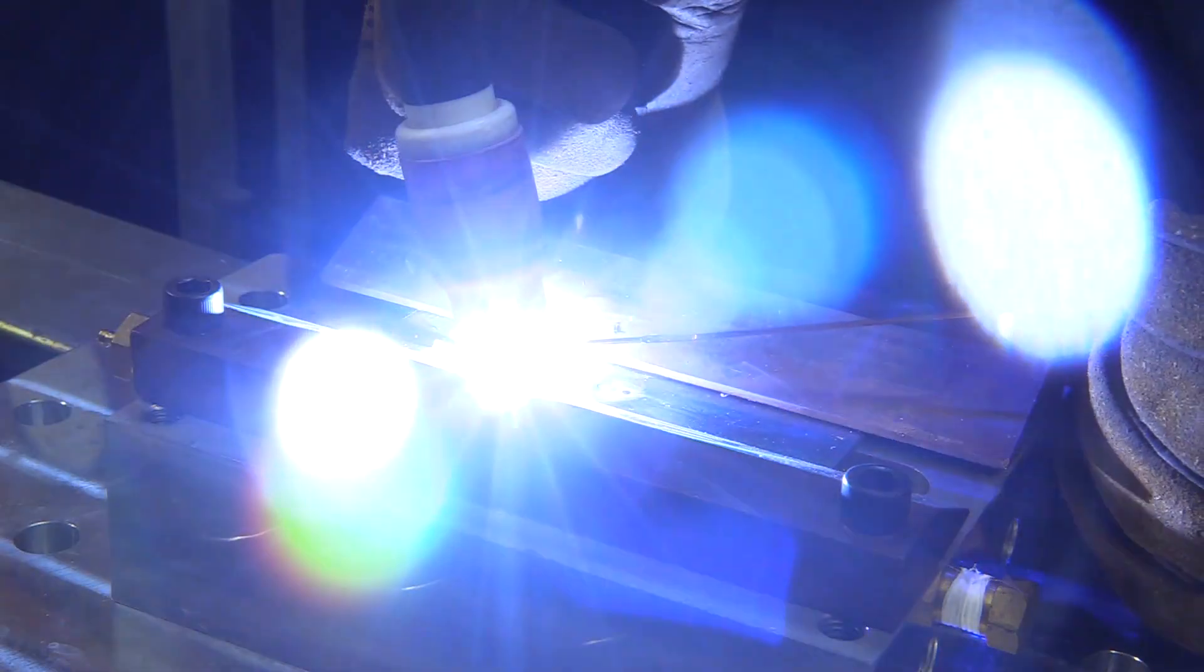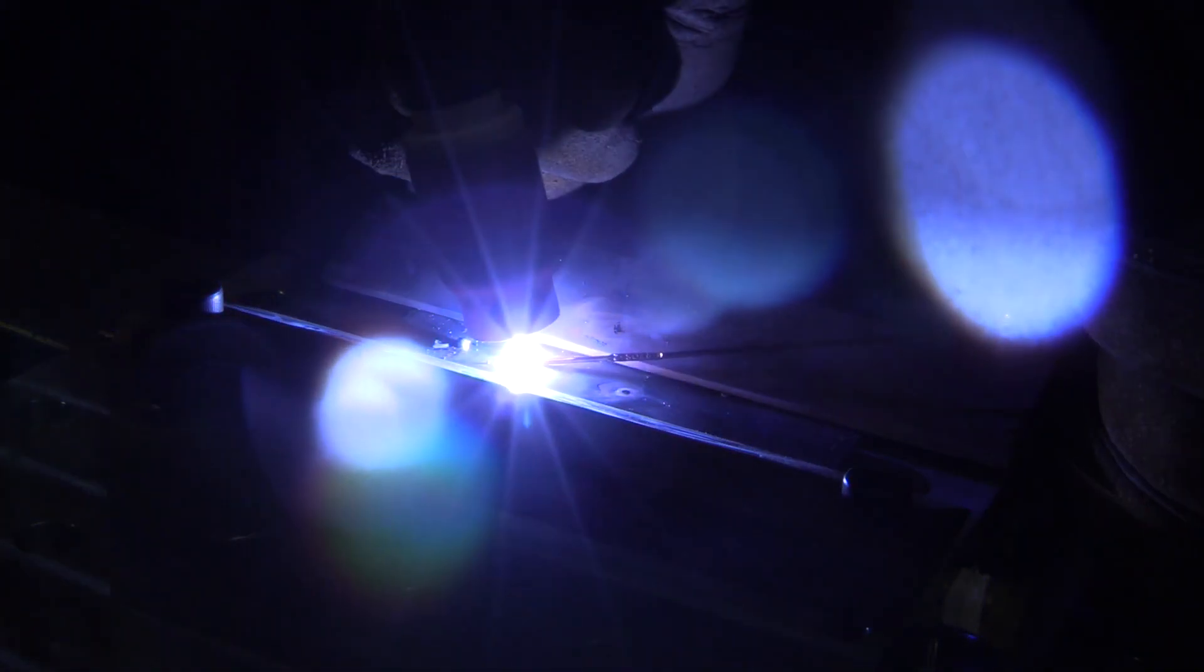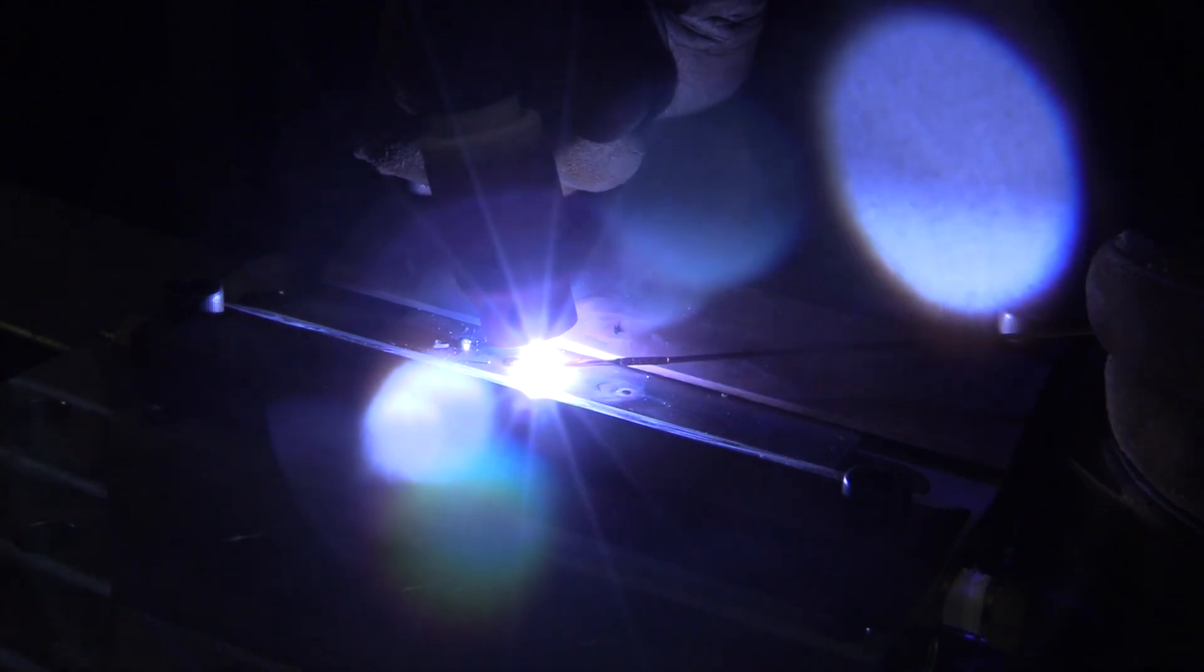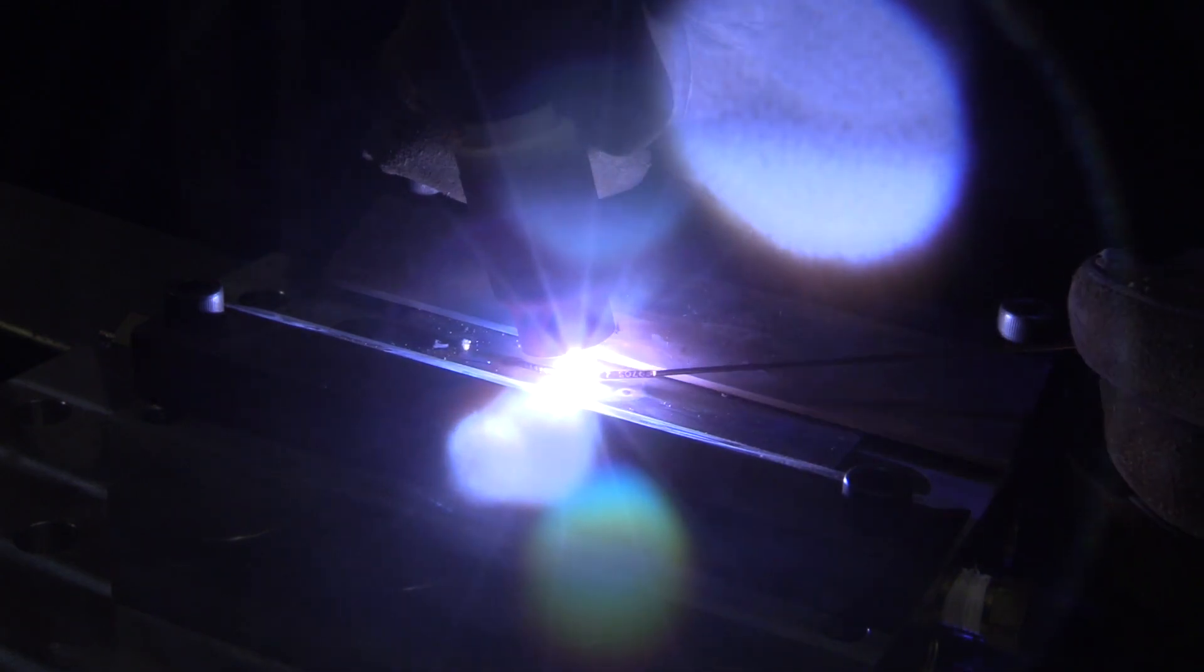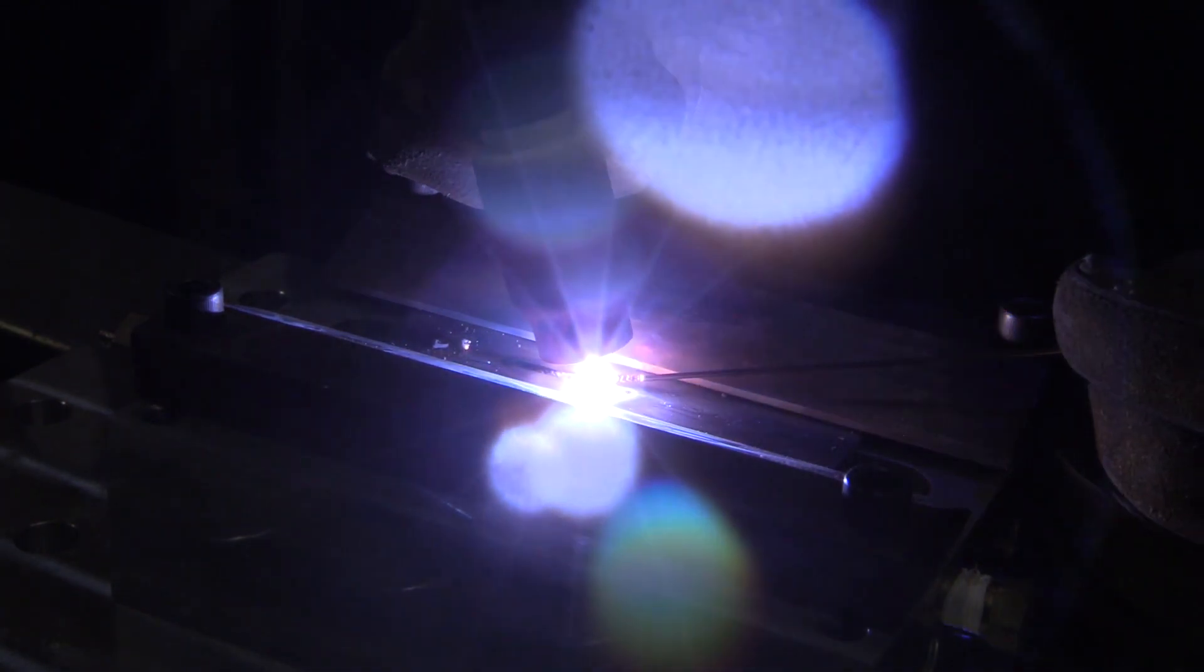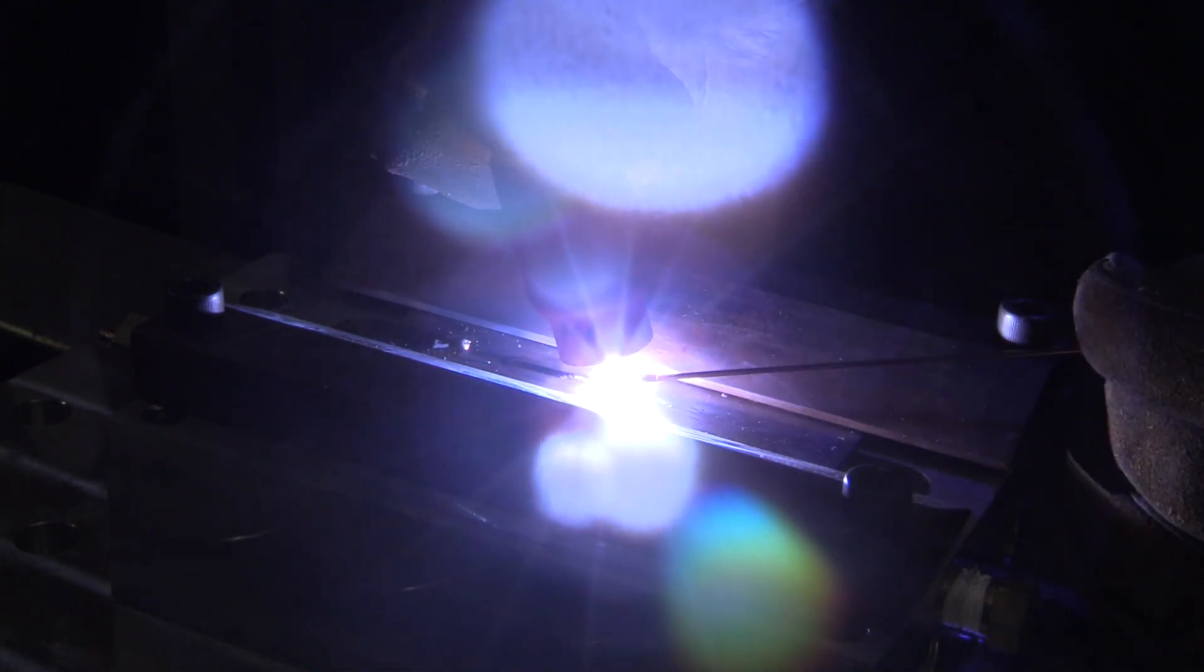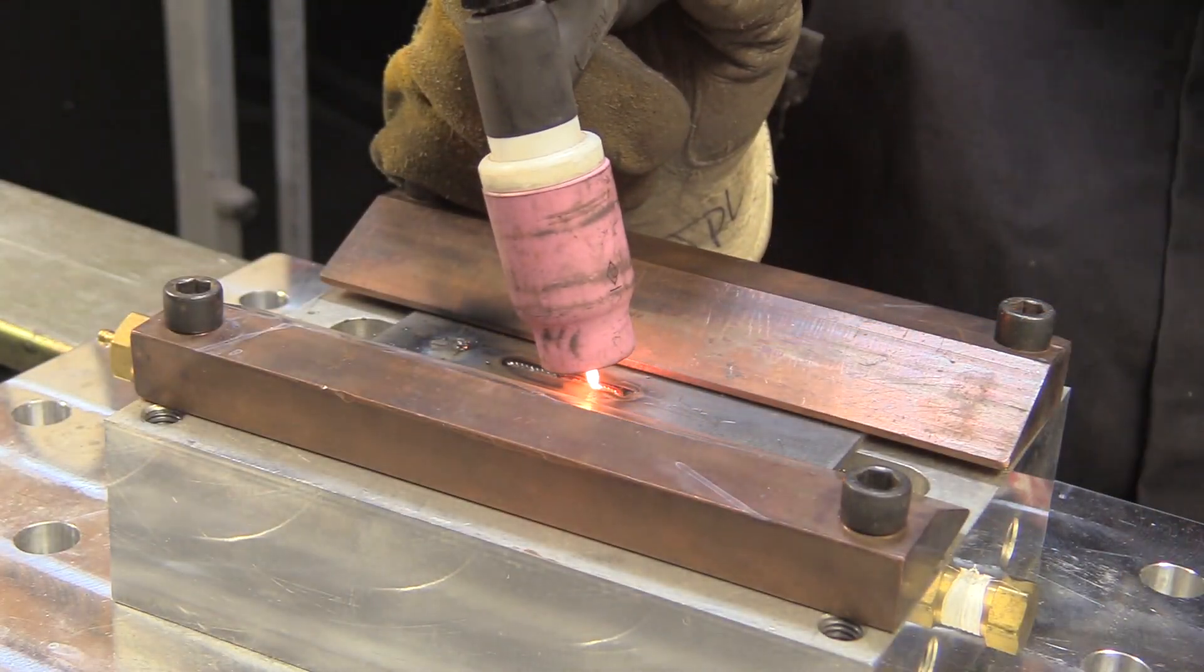As you can see here one more time, this is what it should look like. No spatter going everywhere, no nasty fumes, a nice, smooth, continuous weld. This is what we're going to strive for. With the machine set up correctly, the polarity correct, the gas flow correct, everything. You want it to look something like this.